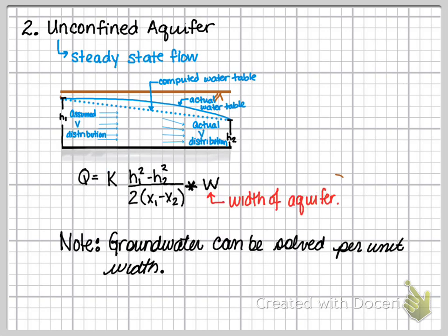The flow rate for an unconfined aquifer is calculated as Q equals K over 2x times the square differences of the depths, h1 squared minus h2 squared, divided by 2 over the change in distance from point 1 and 2.